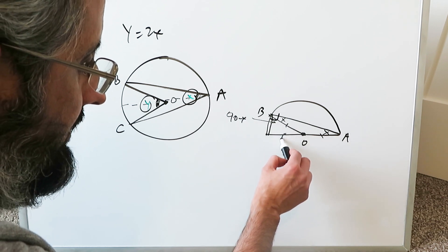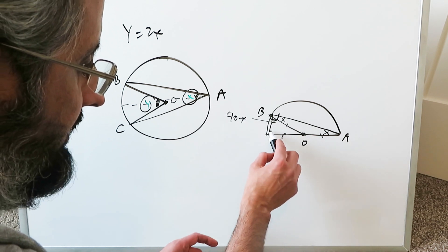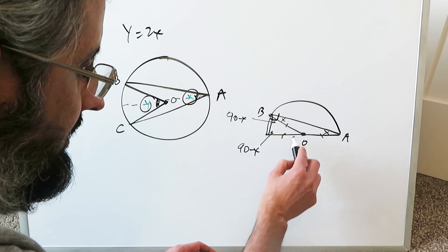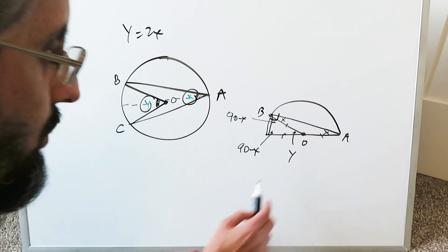This here is a radius. This here is a radius. Equal angles opposing equal sides. This here must also be 90 minus X. We'll call this angle right here Y.